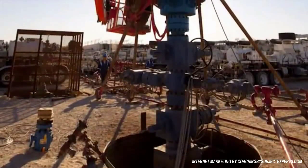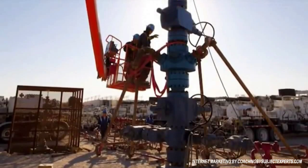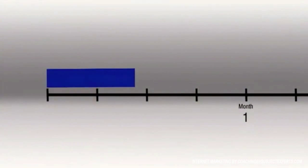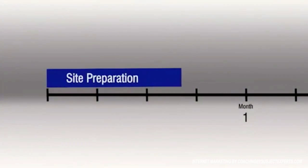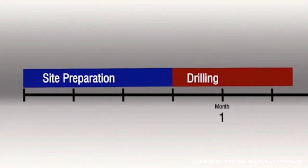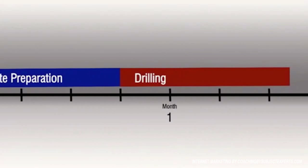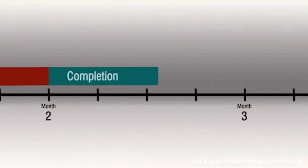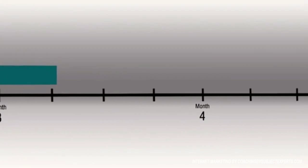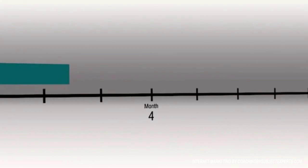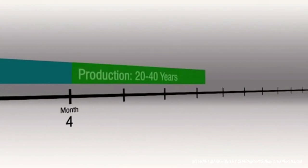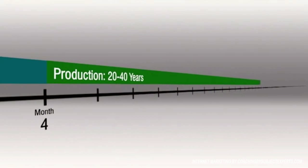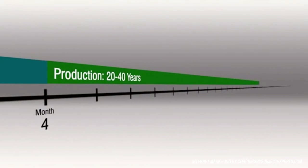The whole process of developing a well typically takes from three to five months: a few weeks to prepare the site, four to six weeks to drill the well, and then one to three months of completion activities, which includes one to seven days of stimulation. But this three to five month investment can result in a well that will produce oil or natural gas for 20 to 40 years or more.